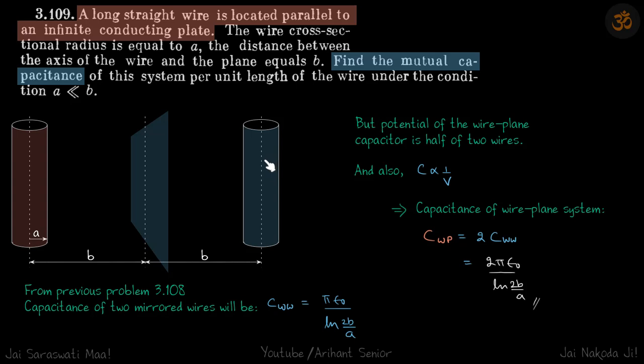When we place this wire, we can now forget about the plane. We are only left with two wires. For this system of two wires, we have already seen in a previous problem that the capacitance of these two mirrored wires, C_WW (wire-wire), is π·ε₀ divided by ln(2b/a), where 2b is the distance between the wires.